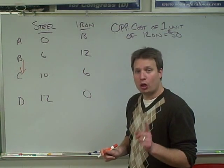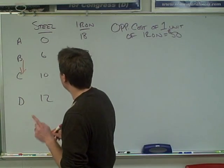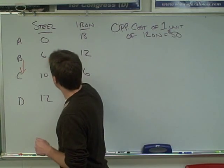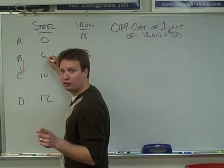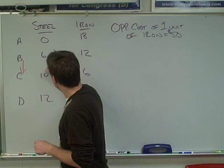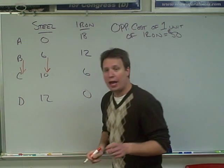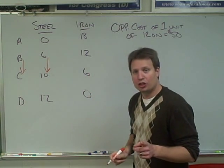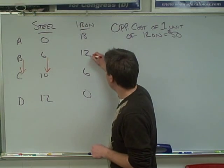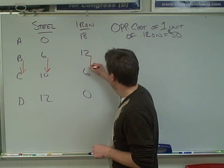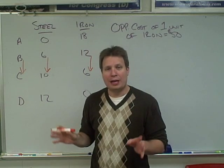In going from alternative B to alternative C, we are going from producing 6 units of steel to 10 units of steel. And then we are going down from 12 units of iron to 6 units of iron.